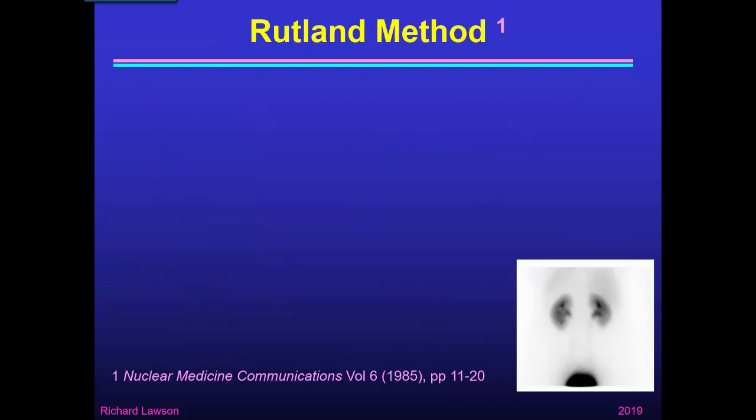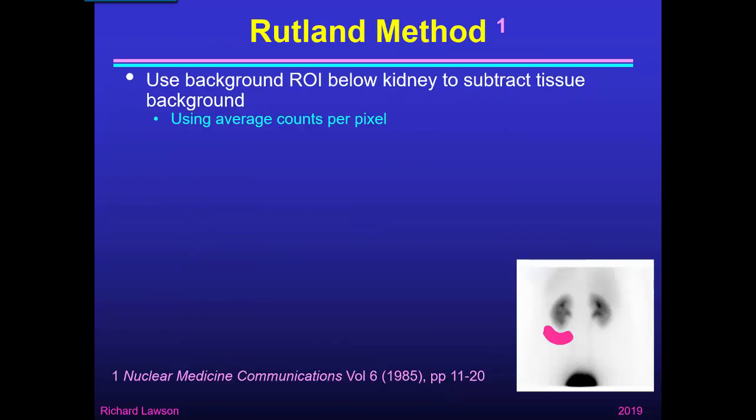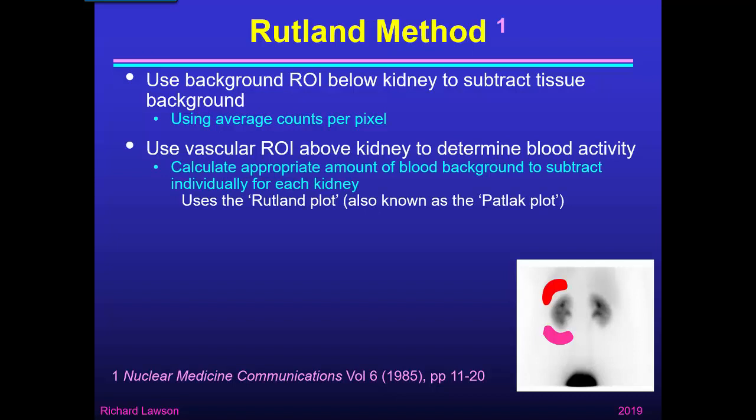The Rutland method uses a background region below the kidney to subtract tissue background, using the average counts per pixel from that region. But it also uses a separate vascular region somewhere above the kidney — usually the spleen or the heart — to determine blood activity, and calculates the appropriate amount of blood background to subtract individually from each kidney. The graph produced is called the Rutland plot, though it's sometimes also known as the Patilag plot.